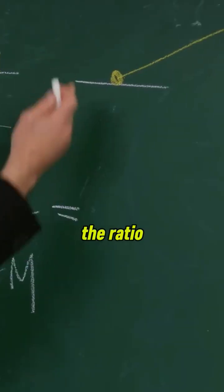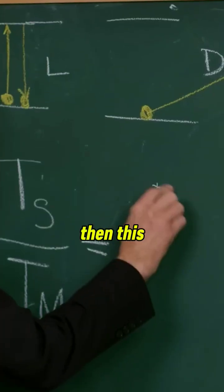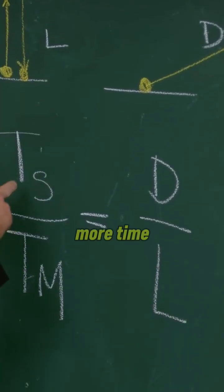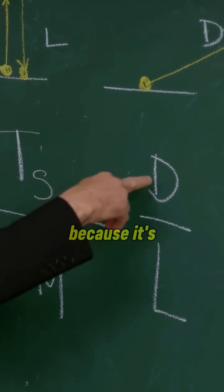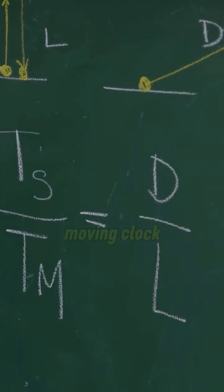Well, that ratio is going to be the ratio of the lengths. Then this will be given by D over L. More time on the stationary because it's longer distance on the moving clock.